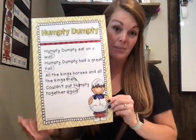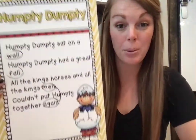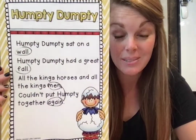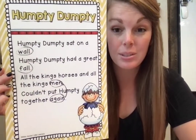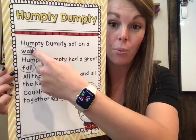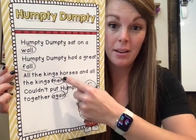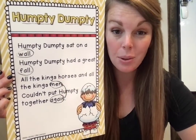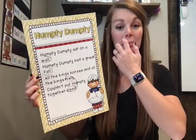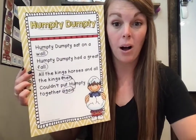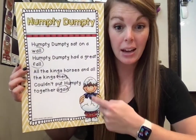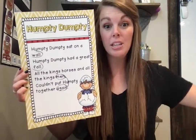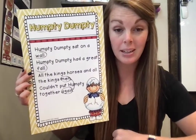Okay, this is another graphic that we use, moms and dads — you've seen this poster in my classroom before, huh, boys and girls? This is our poster that we used, and we have some rhyming words: wall, fall, men, again. Rhyming words help us — that's why we do nursery rhymes! Humpty Dumpty sat on a wall. Humpty Dumpty had a great fall. All the king's horses and all the king's men couldn't put Humpty together again.